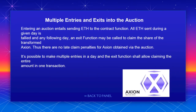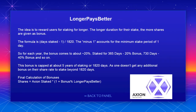Multiple entries and exits into the auction: entering an auction entails sending ETH to the contract function. All ETH sent during a given day is tallied, and the following day an exit function may be called to claim the share of the transformed Axion. There are no late claim penalties for Axion obtained via the auction. It's possible to make multiple entries in a day, and the exit function allows claiming the entire amount in one transaction.